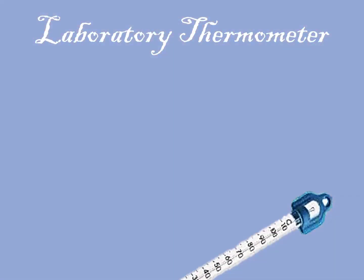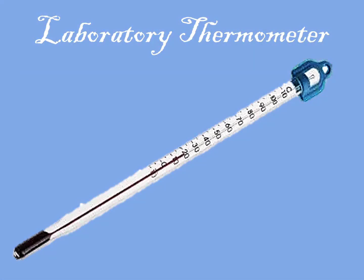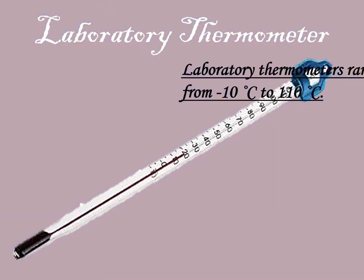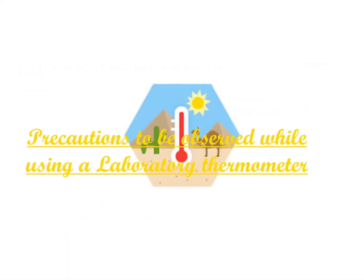Laboratory Thermometers are used in laboratories to measure temperature. These thermometers can measure the temperature of hot objects such as boiling water, or cold objects such as ice. The commonly used laboratory thermometers have a range from minus 10 degrees Celsius to 110 degrees Celsius.